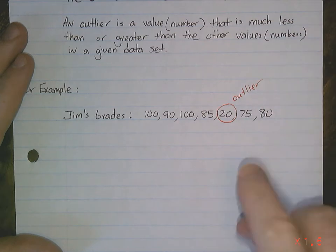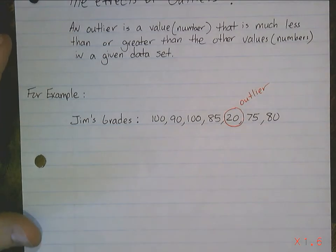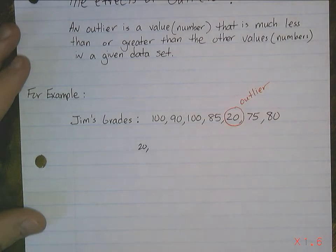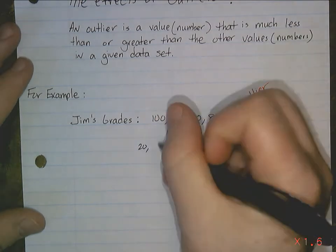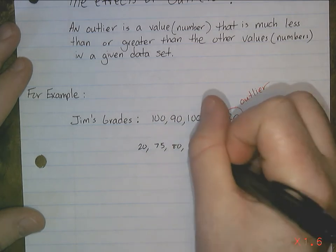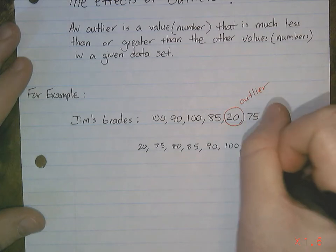So we're going to see how this affects the mean, median, mode, and range. Let's do the mean last. Let's start putting this in order from least to greatest. So the first number, the lowest number is 20. Next to that is going to be 75, 80, 85, 90, 100, 100. And so we've got 7 grades.